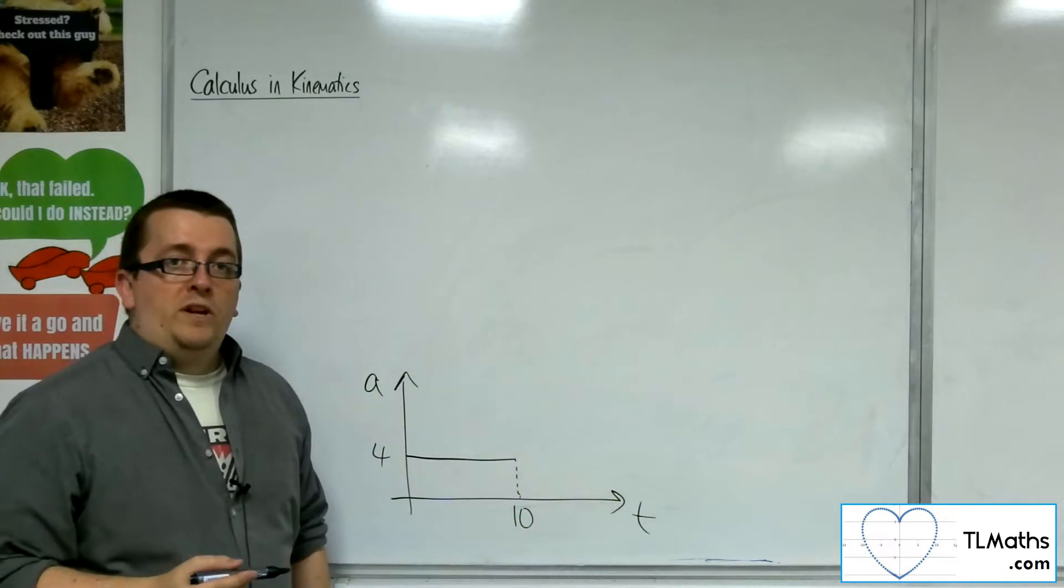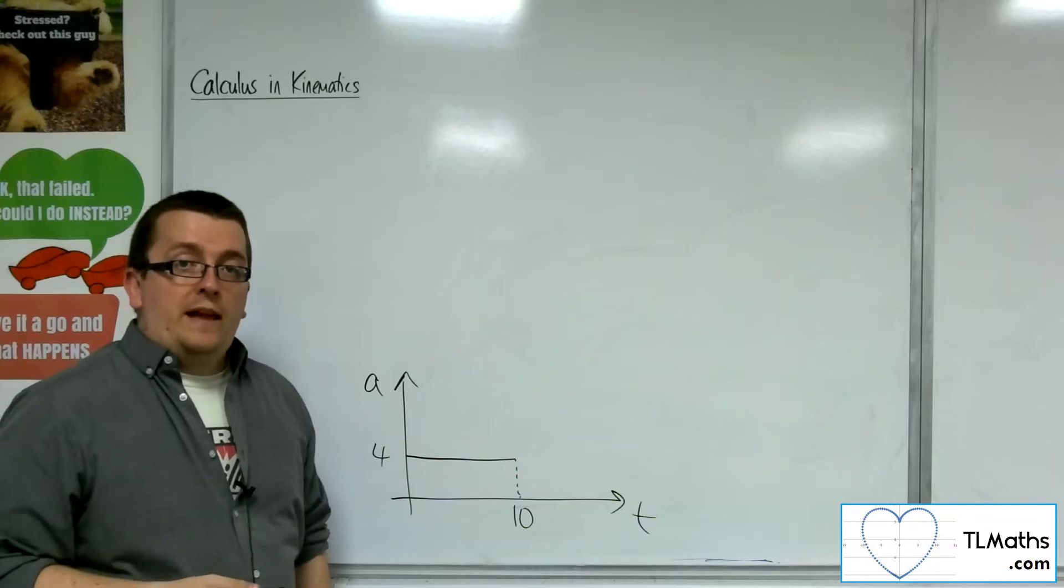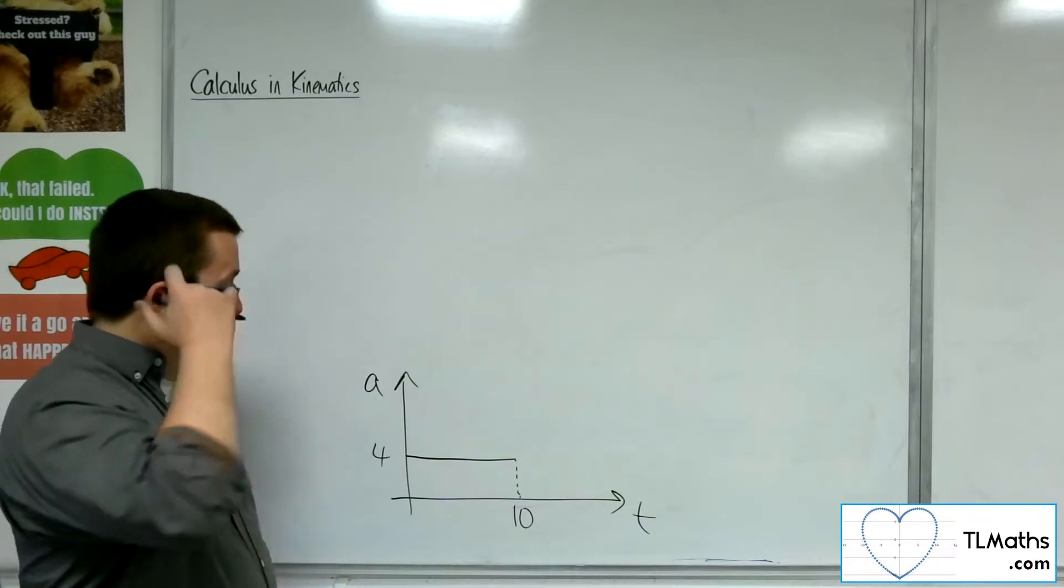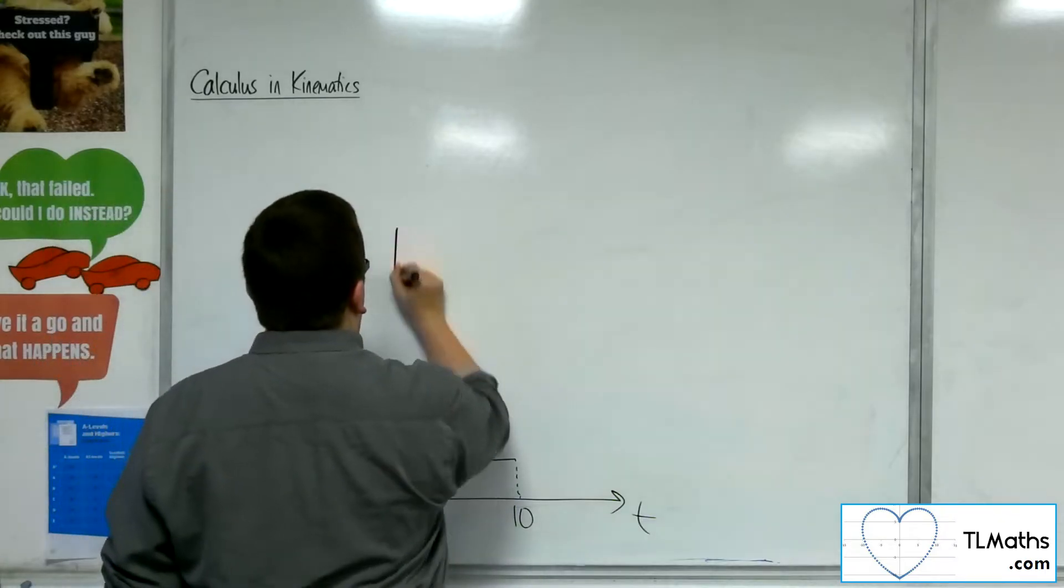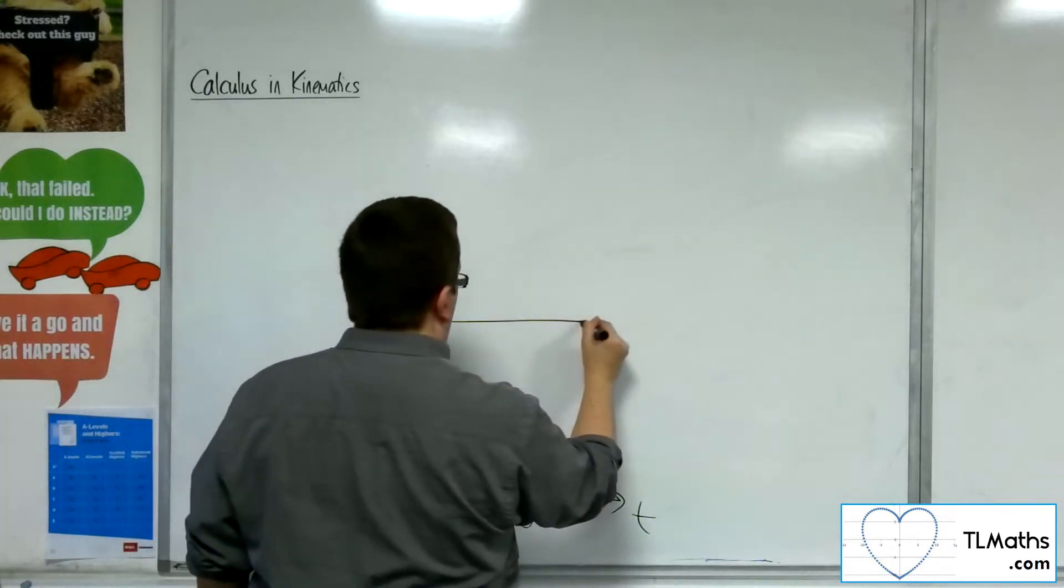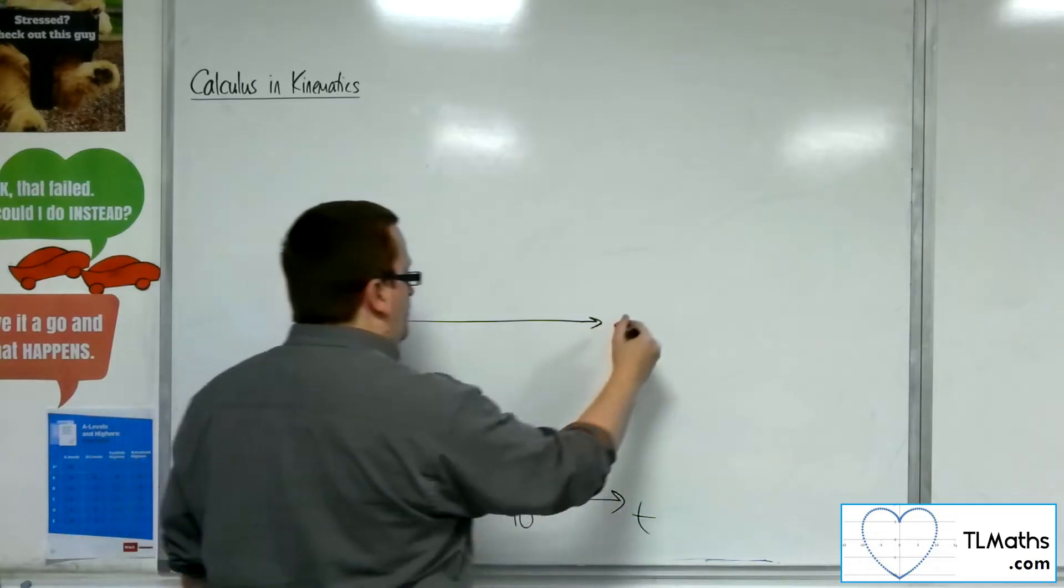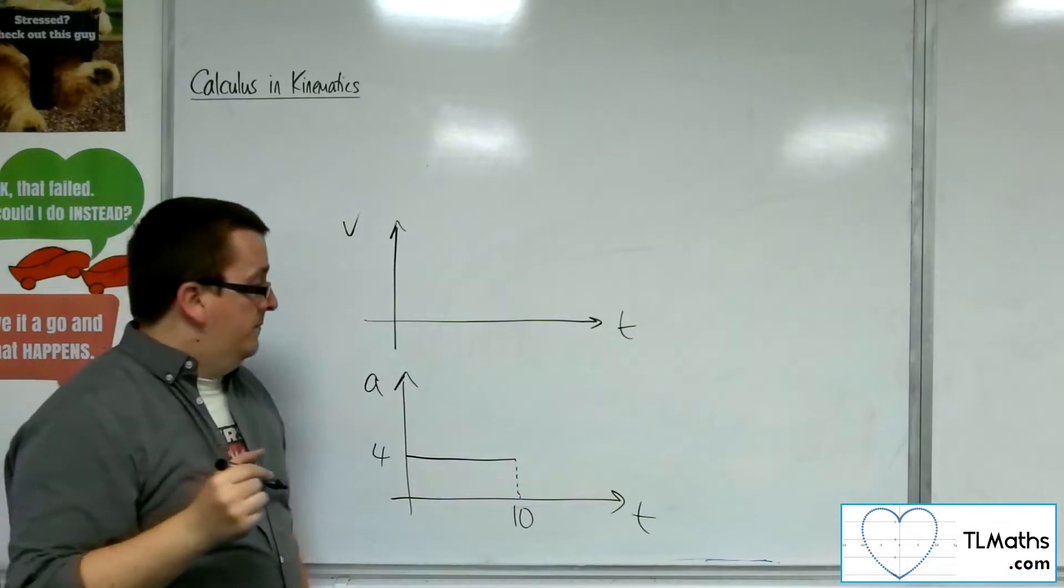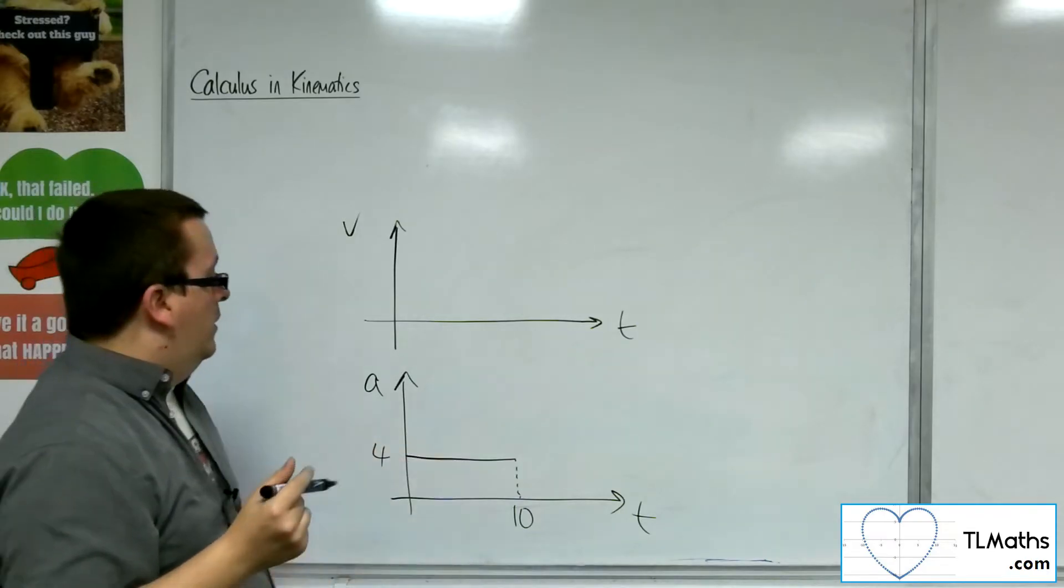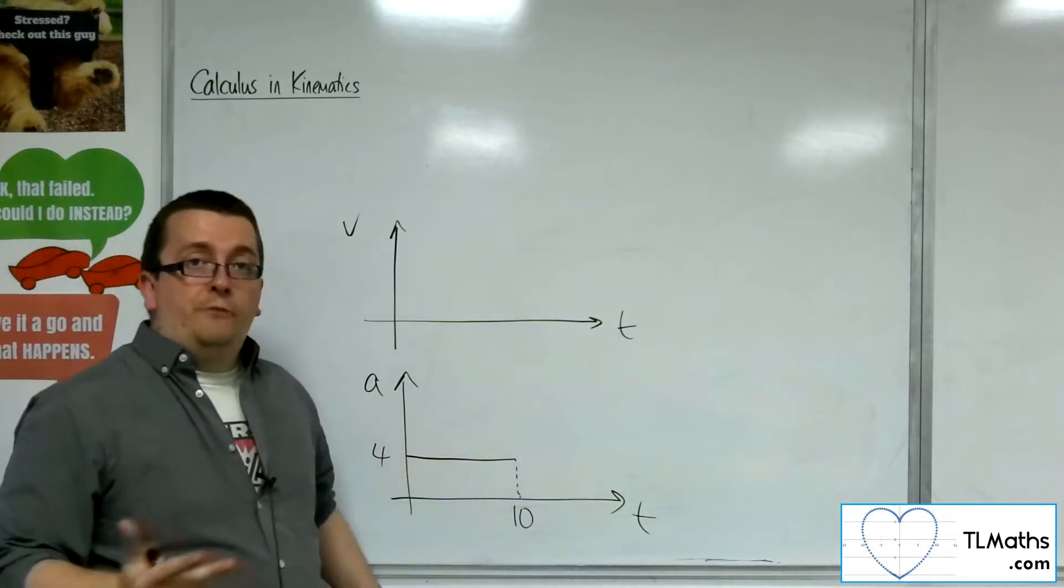And then we could work our way with that bit of information. So what we then found was that if we then looked at velocity, then the velocity would be a straight line that would have a diagonal line that would have gradient of 4.